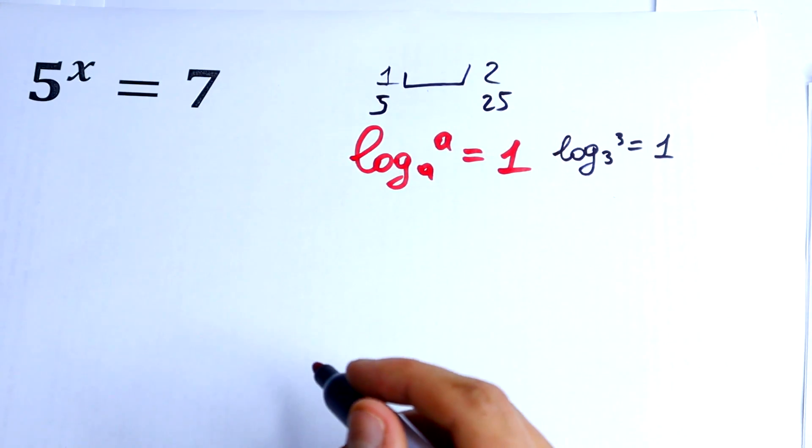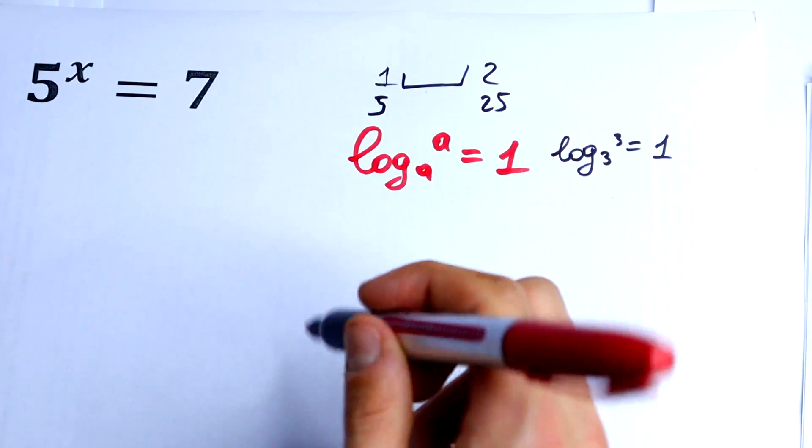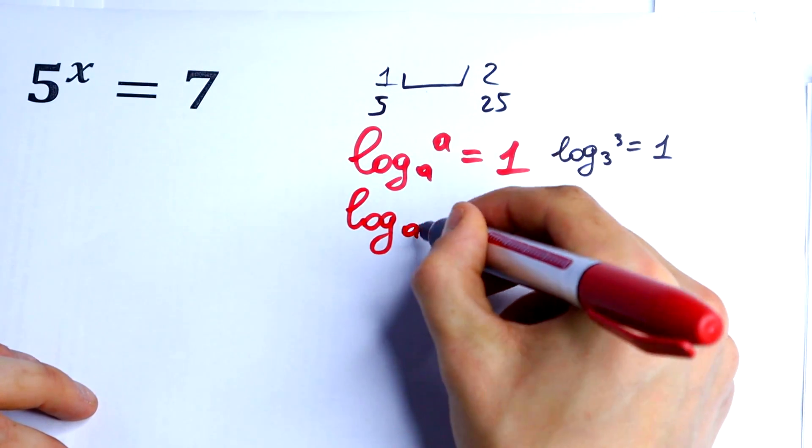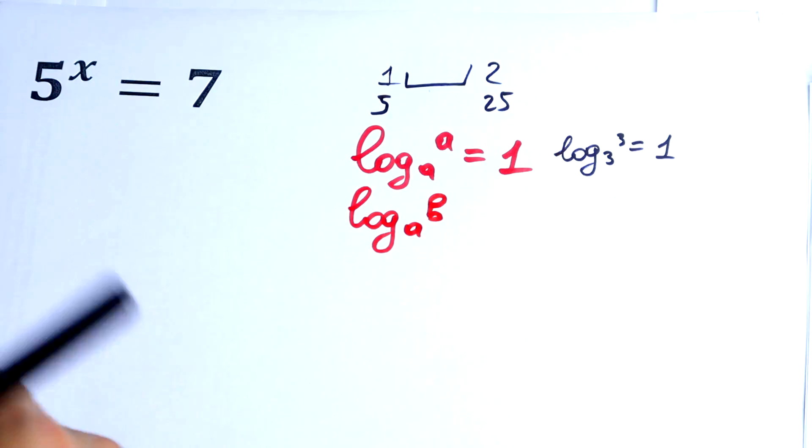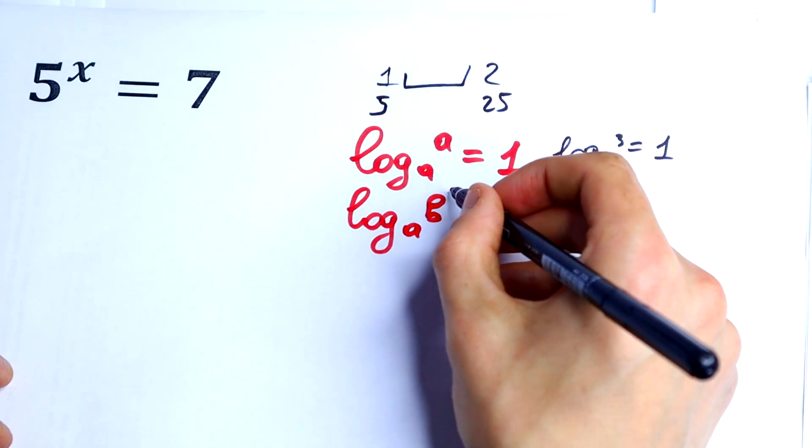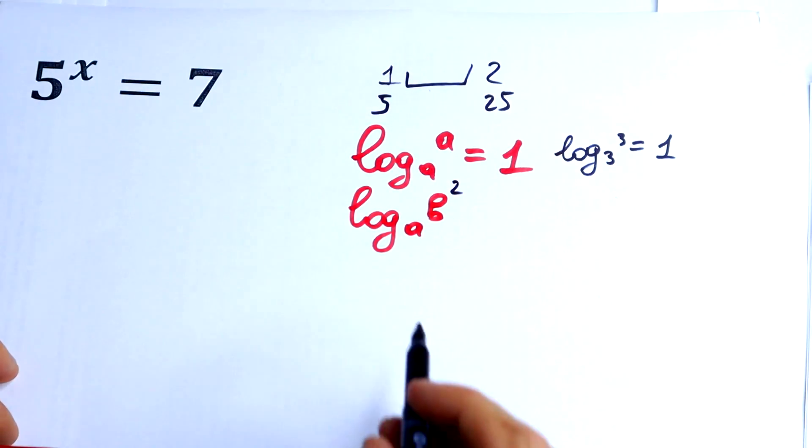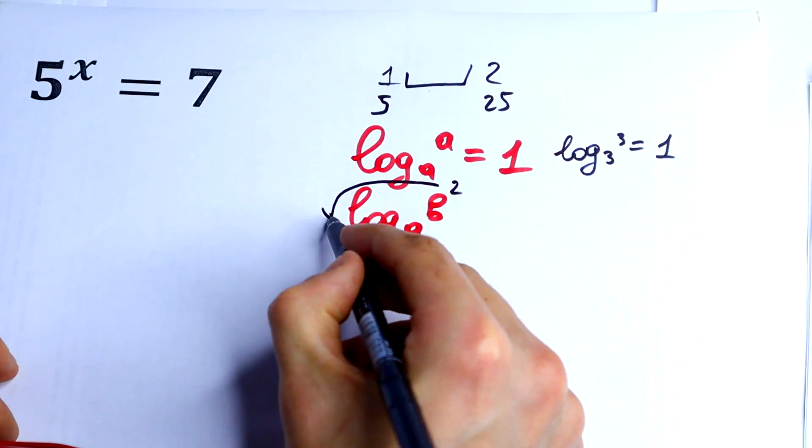The second rule we need: if we have log base a of b, and we have an exponent with that b, for example square, this square jumps right here.